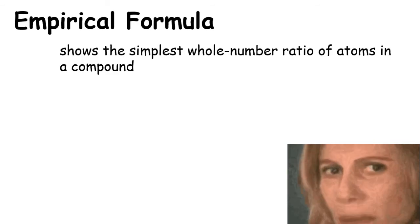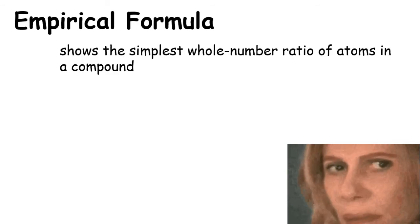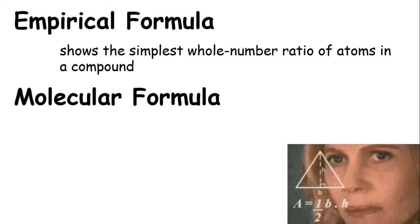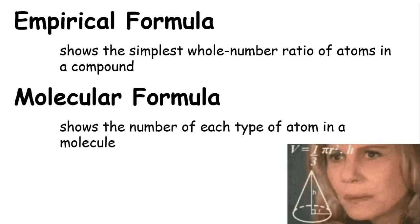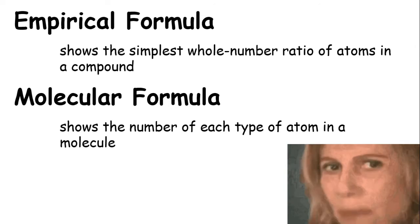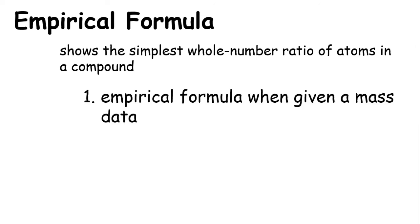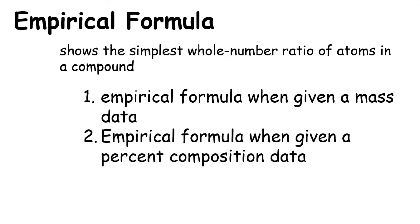Empirical formula shows the simplest whole number ratio of atoms in a compound. Molecular formula shows the number of each type of atom in a molecule. Here, we're going to talk about how to calculate empirical formula when given mass data, and also when given percent composition data.